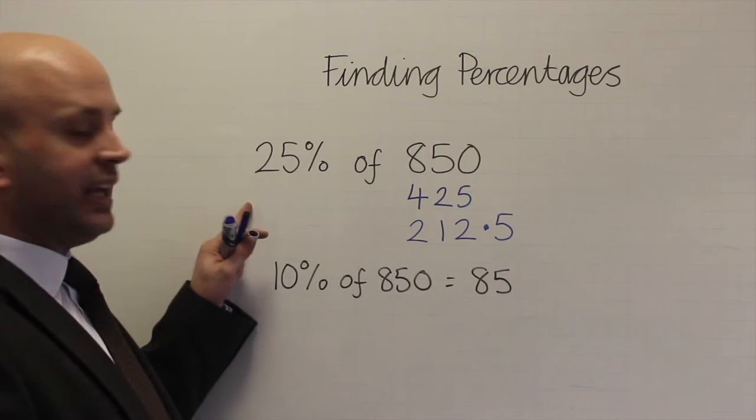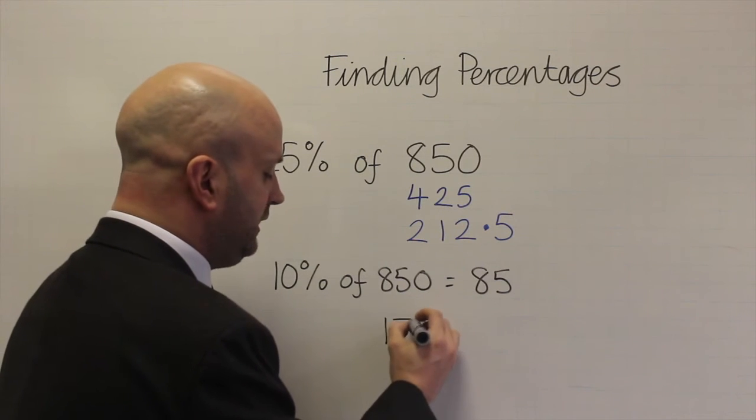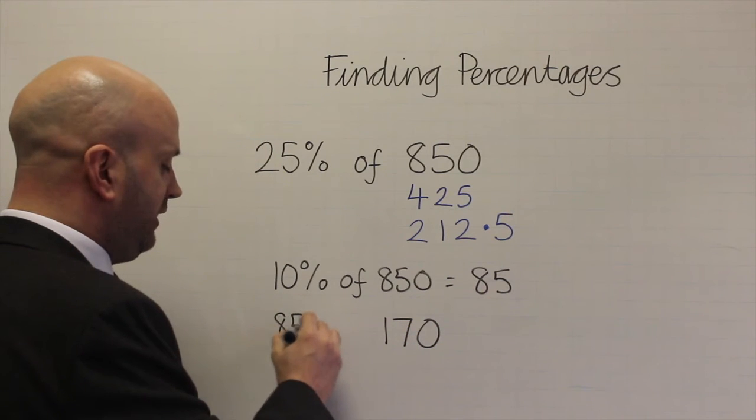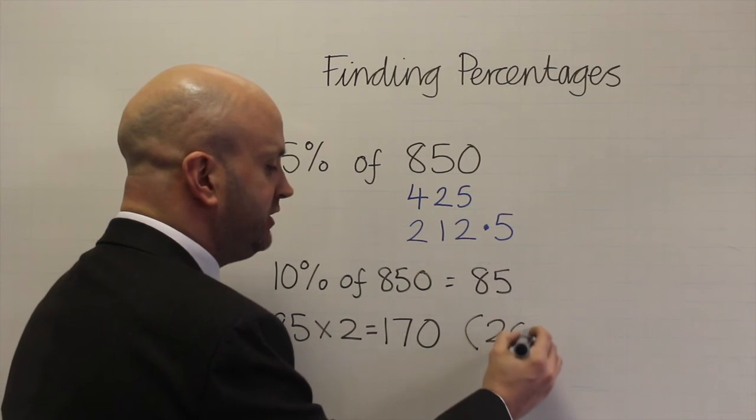So if I were to get two lots of 85 which would make 170, 85 times 2, just write that in there, that would account for 20%.